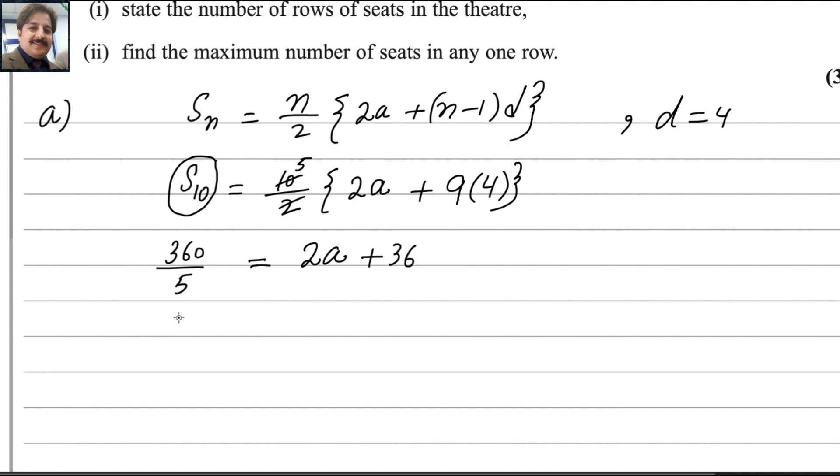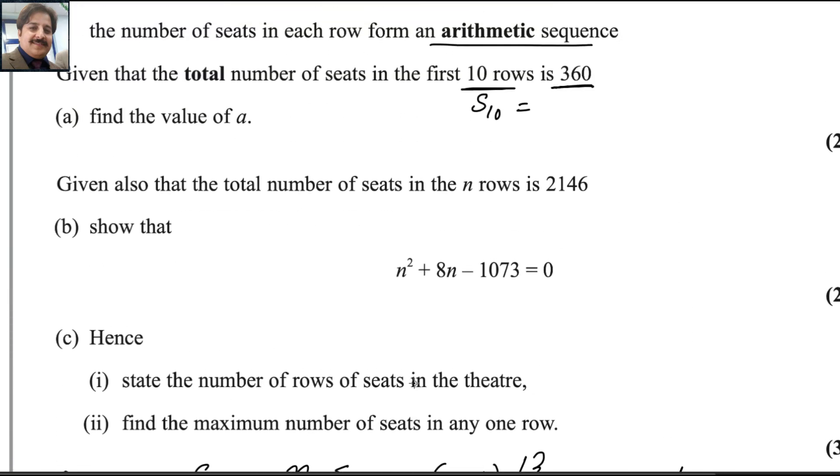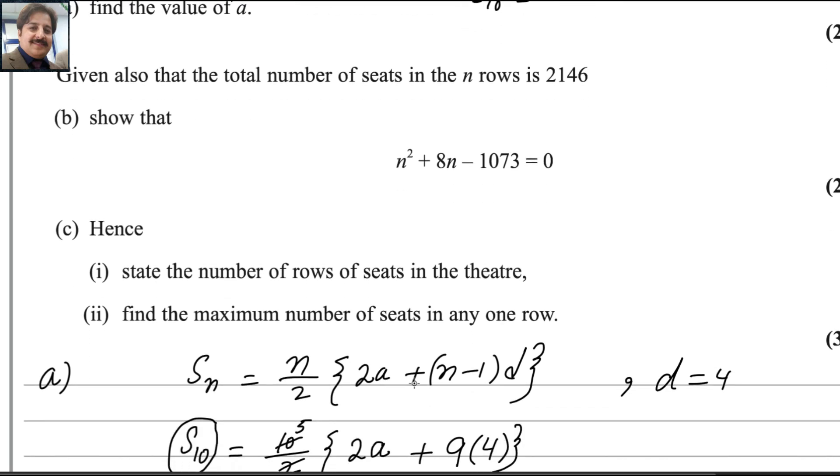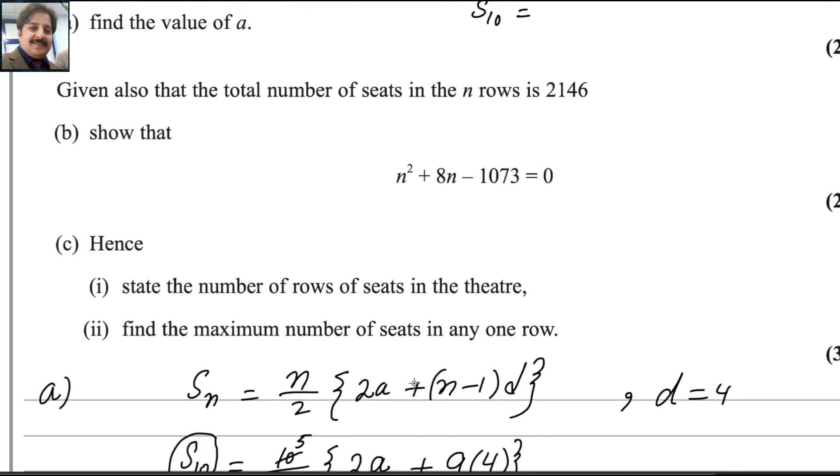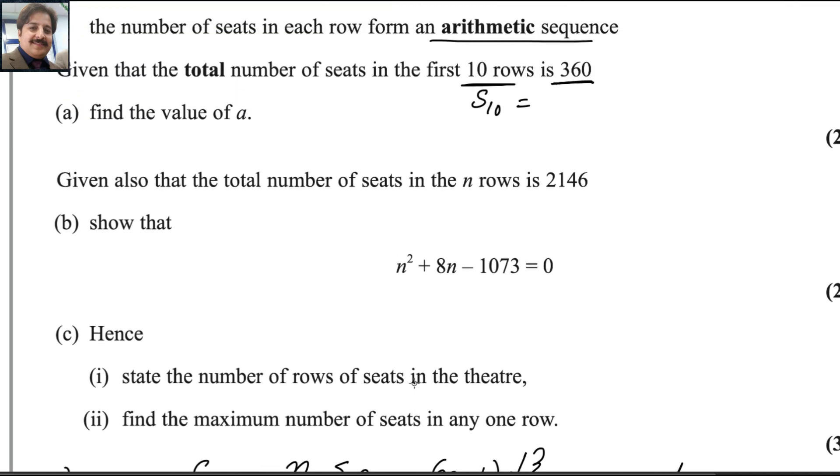Then 72 minus 36 is equals to 2a. And 2a will be equals to 36. And a will be equals to 18. So we got a. Now, you need to find the value of a. First part is done.